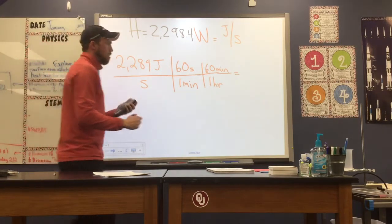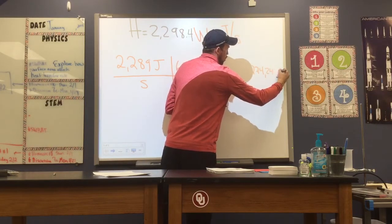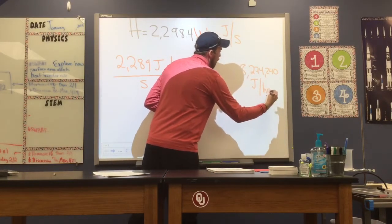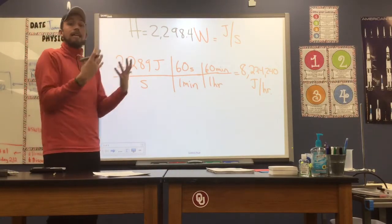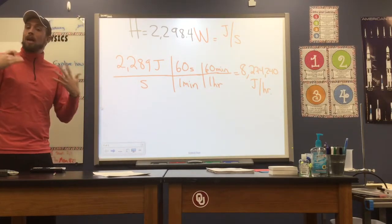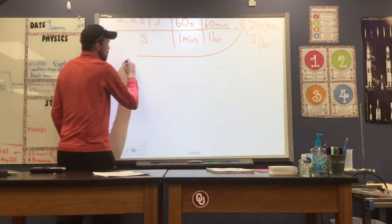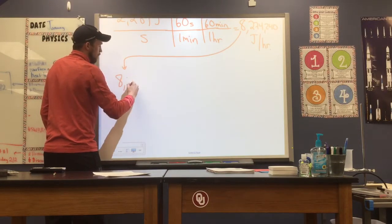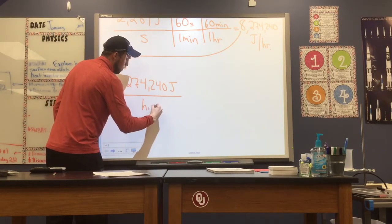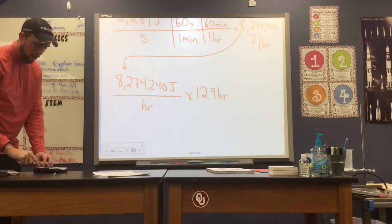I get about 8,274,240. And the units on this number are a little bit different than what we're used to. This is joules per hour, because our question is asking us how much heat moves through this brick wall in this period of time. So now that we're in joules per hour, we're just going to take our time value and multiply by our rate. So I'll take this number here, we'll bring it down. I've got 8,274,240 joules moving through our wall per hour, and we're going to multiply by 12.9 hours. We'll take this number, multiply by 12.9.